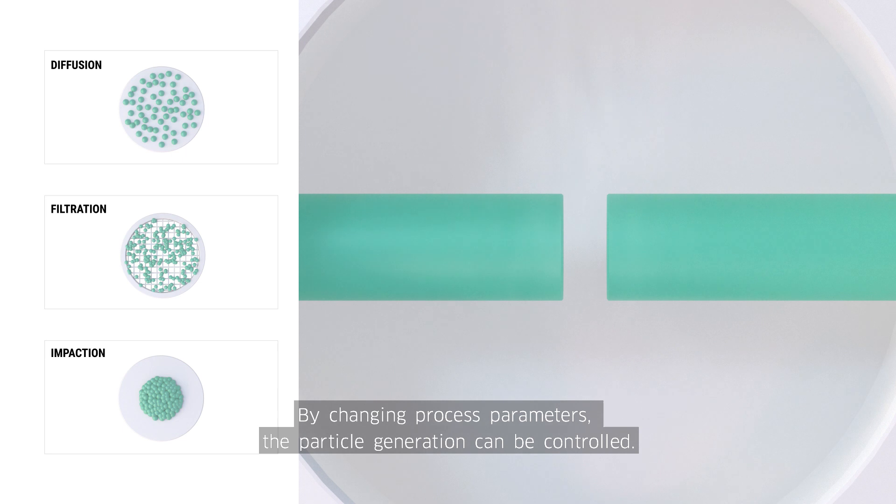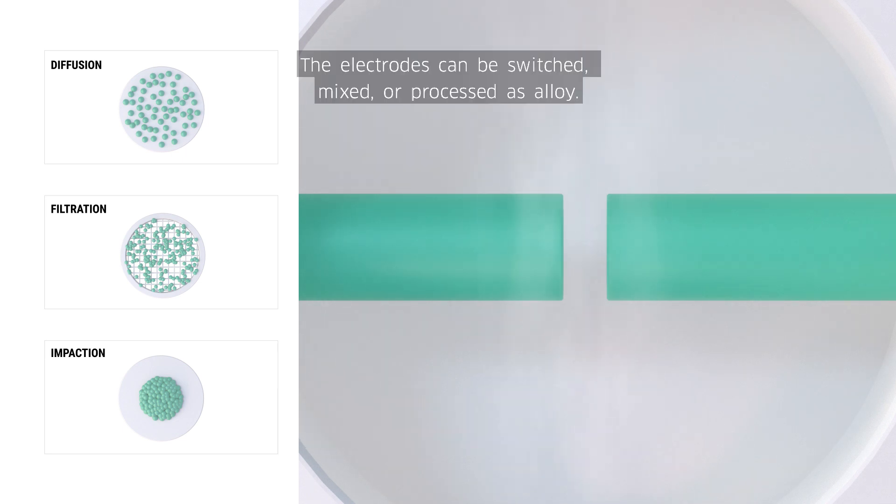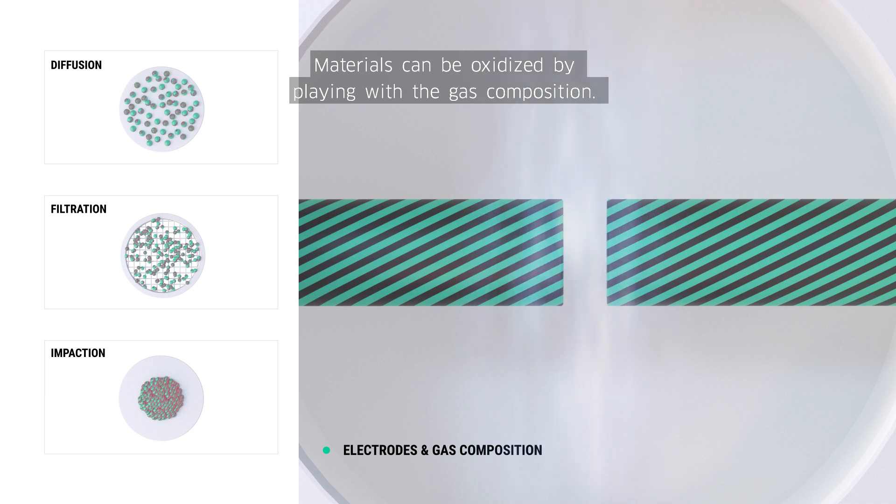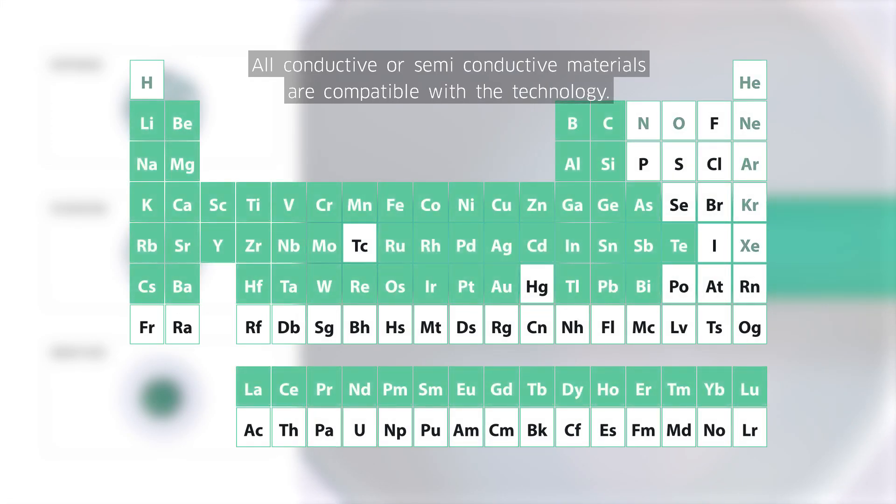By changing process parameters, the particle generation can easily be controlled. The electrodes can be switched, mixed, or processed as alloy. Materials can be oxidized by playing with the gas composition. All conductive or semi-conductive materials are compatible with the technology.